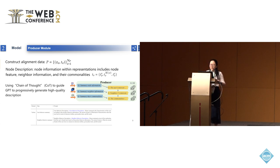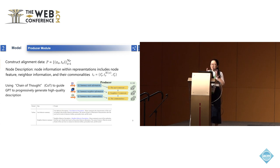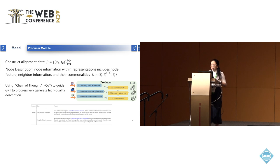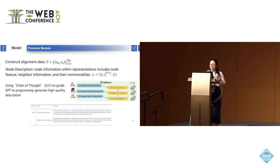Given the node embedding zv, we introduce the producer module to construct alignment data, namely zv–tv pairs where tv is the node description. The information encoded in the node embedding connects deeply with how graph models are designed — for example, most graph neural networks model similarities between a node and its neighborhood. So the descriptions for each node should include details about node attributes, neighbor attributes, their similarities, and model insights. We use chain-of-thought prompting to guide ChatGPT to generate this information step by step.